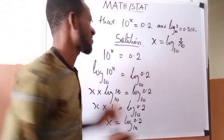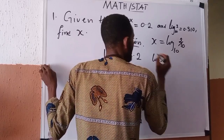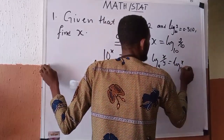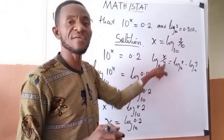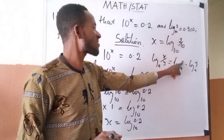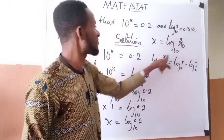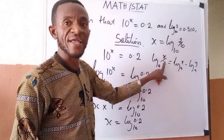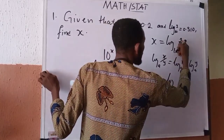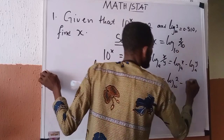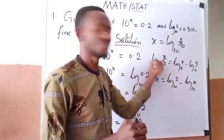We know that log of x over y in base a can be expressed as log of x base a minus log of y base a. Applying that same principle here, treating 2 as x and 10 as y, what I have becomes: x equals log of 2 base 10 minus log of 10 base 10.